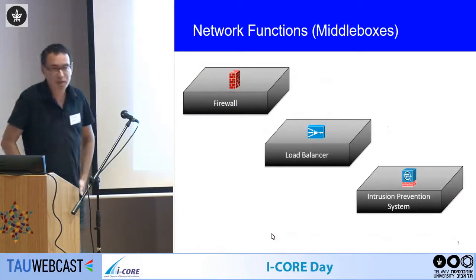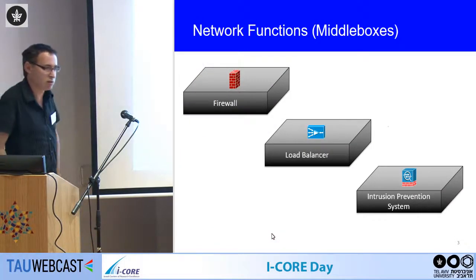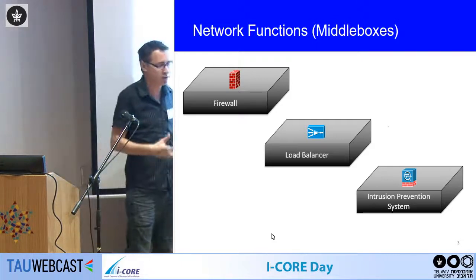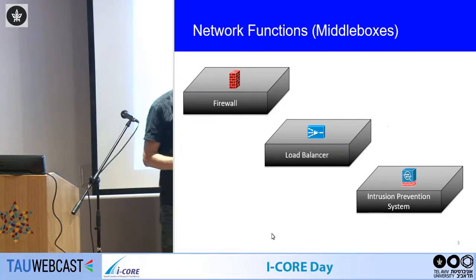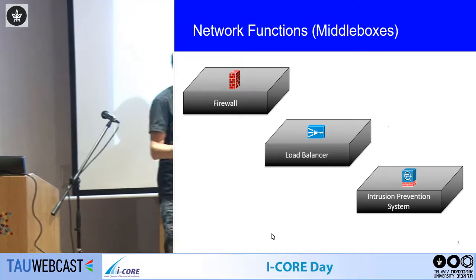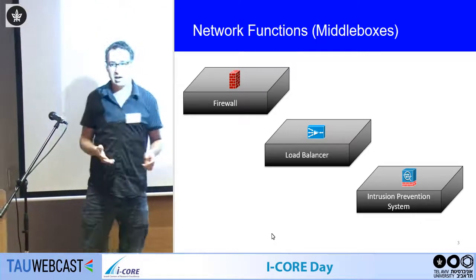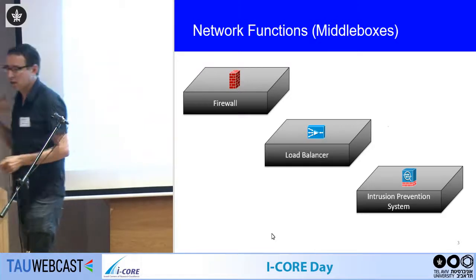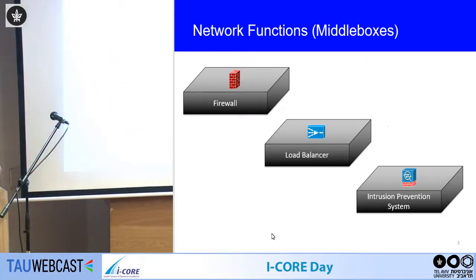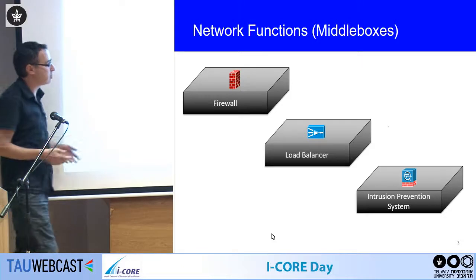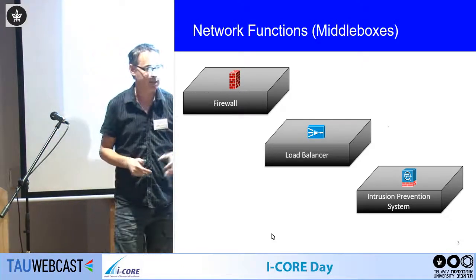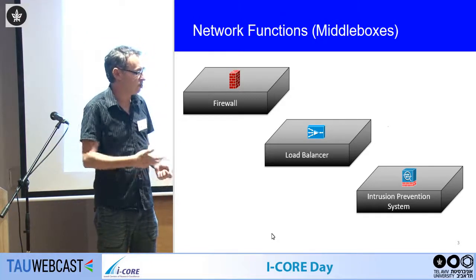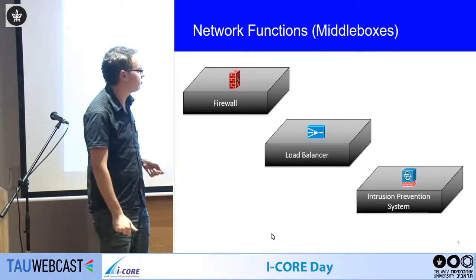What are middleboxes, or network functions? They are functions placed between the source and destination that need to process packets. Examples include firewalls, security appliances like network intrusion detection systems or intrusion prevention systems, load balancers, and other appliances needed for correct operation of the network.